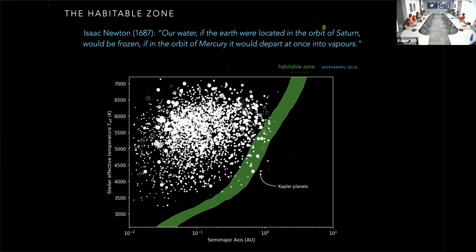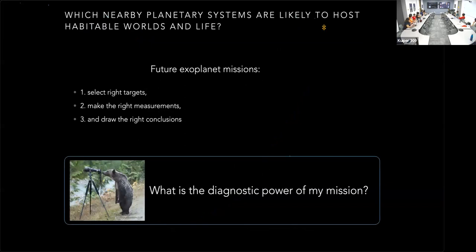Two takeaways: most discovered planets—these are Kepler planets here—are actually closer than the habitable zone; they're in hotter regimes. And the position of the habitable zone in this parameter space depends on the spectral type of the host star. The Alien Earths program centers on the question: which nearby planetary systems are likely to host habitable worlds or even life? Some fundamental parameters can be measured, but others cannot, so we need contextual information.